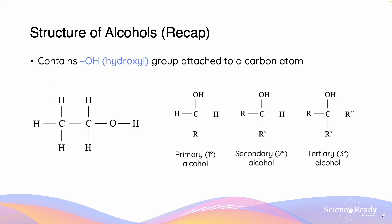Just to recap, alcohols are particular types of compounds which contain an OH group, also known as a hydroxyl group, that is attached to a carbon atom. Here on the left hand side we have an example of the alcohol ethanol. As you can notice, there is a hydroxyl group that is attached to the adjacent carbon.